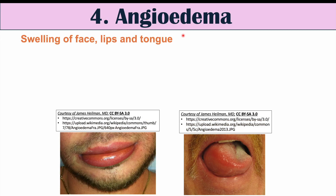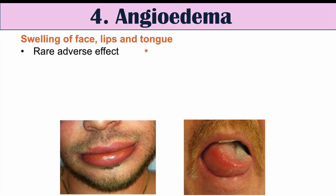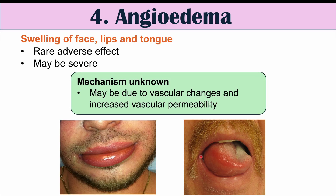Another finding in some patients who take amlodipine is angioedema — swelling of the face, lips, and tongue. This is also a rare adverse effect. It may be severe in cases where significant tongue swelling can block or occlude the airway, making it a potentially serious complication. The mechanism is also unknown, but it may be due to vascular changes and increased vascular permeability. Because amlodipine opens up blood vessels, there may be changes in vascular permeability leading to swelling of tissues in areas like the face, lips, and tongue, perhaps because of more capillaries in those locations.